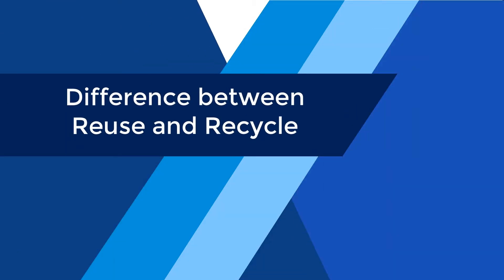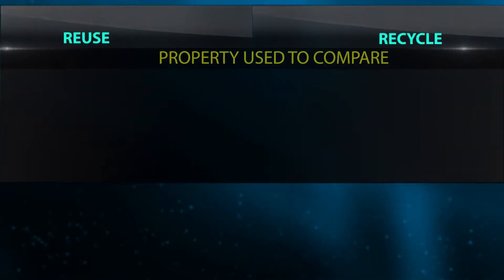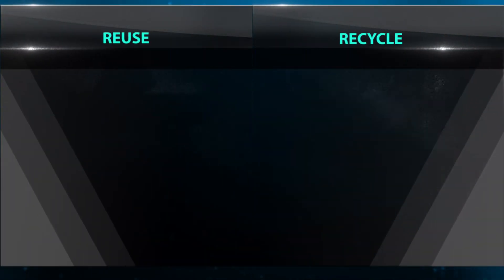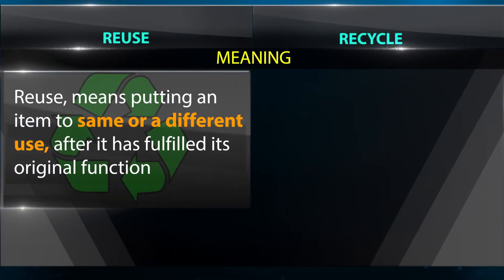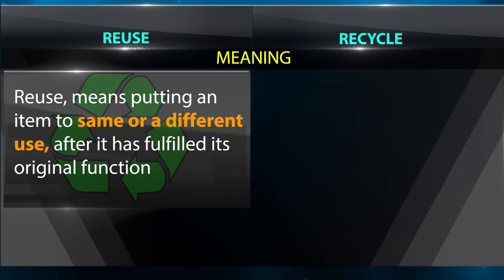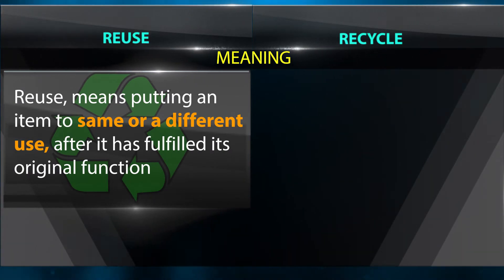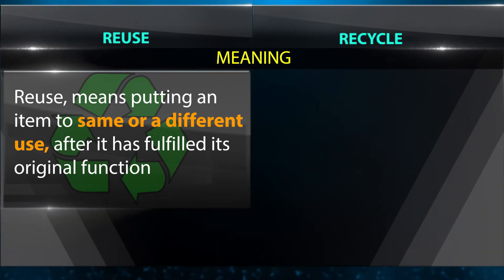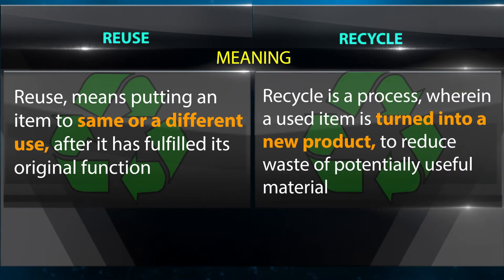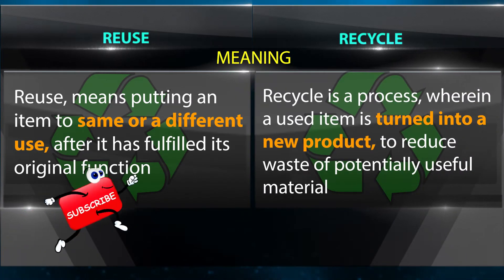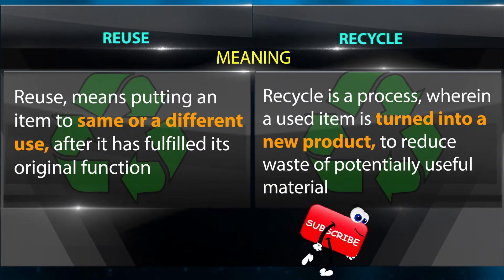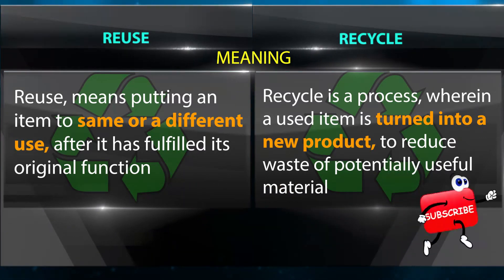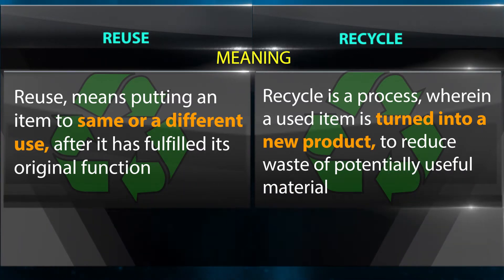Difference between reuse and recycle. Reuse means putting an item to the same or a different use after it has fulfilled its original function. Recycle is a process wherein a used item is turned into a new product to reduce waste of potentially useful material.